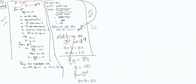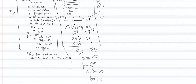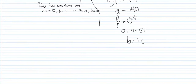So the first method uses factorization to solve the quadratic equation. The second method directly uses (A - B)² = (A + B)² - 4AB, which is simpler. Both methods give the same answer. This was question type 5.